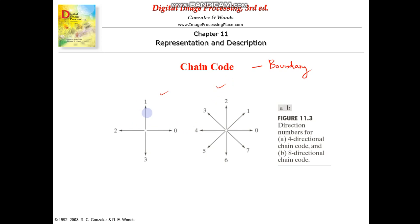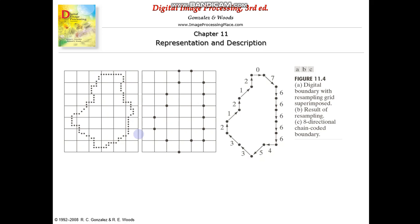We have a numbering scheme for each direction. We acquire the digital image and it is processed in a grid format. We have a boundary and it is processed in a grid format. This grid format may not be equal to the pixel. We approximate the shape to the shape of the grid. Depending upon the algorithm we are using, we approximate to the nearest point.